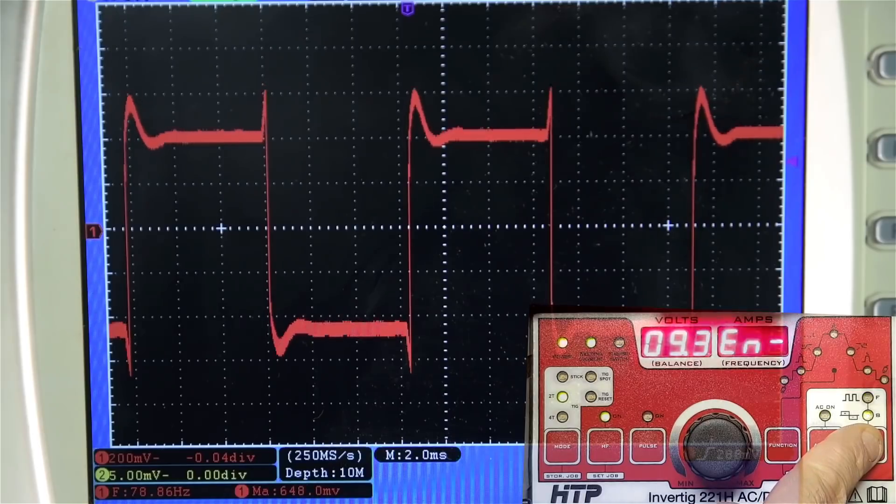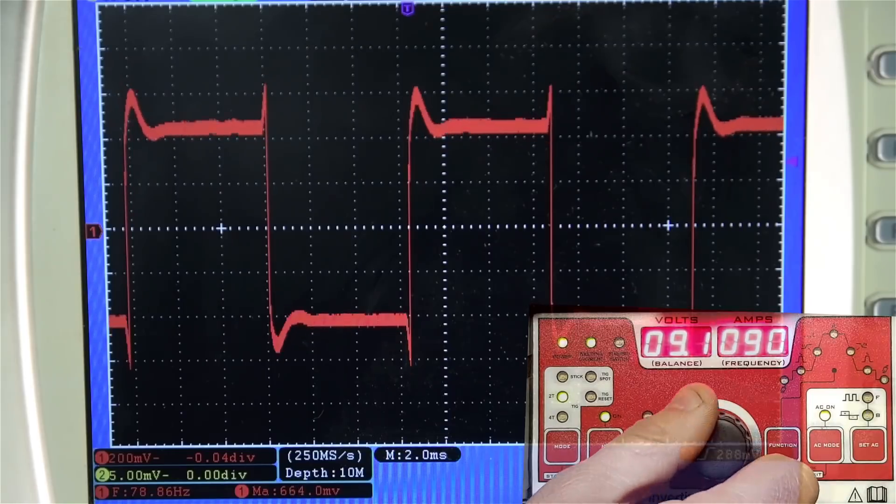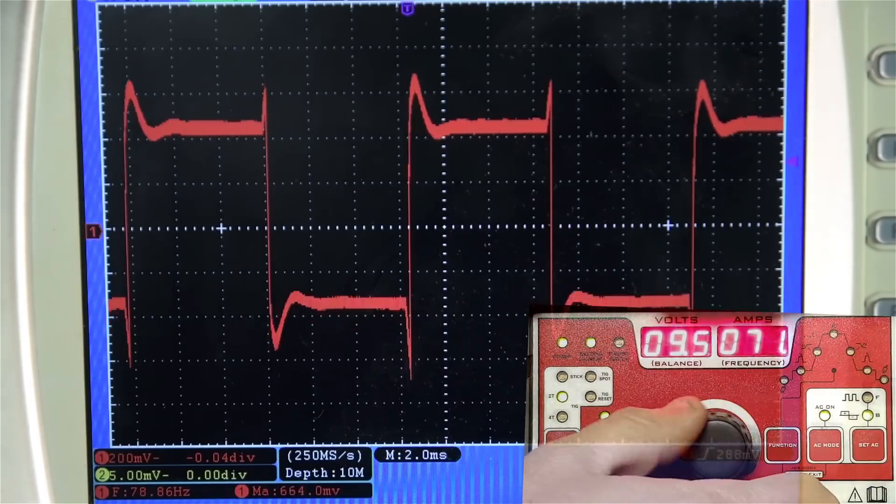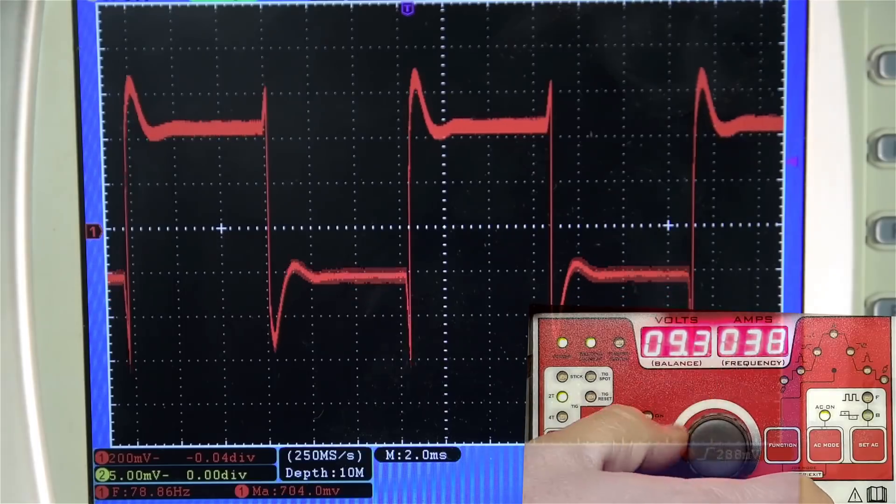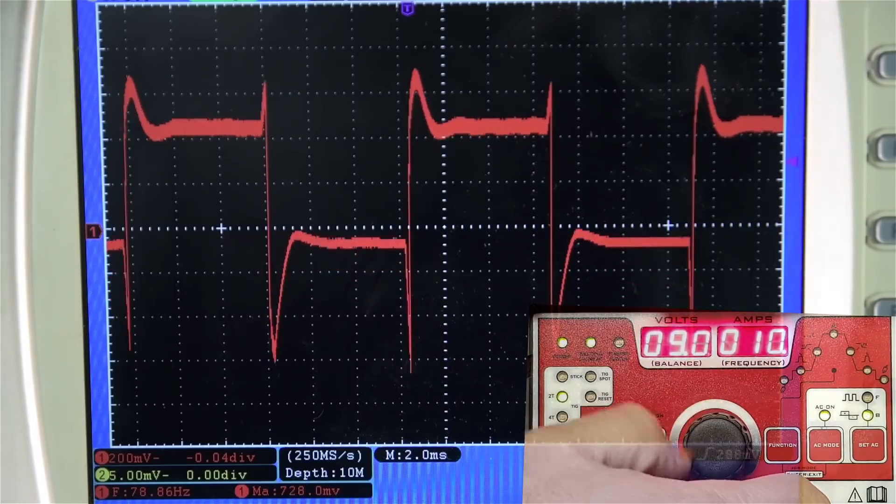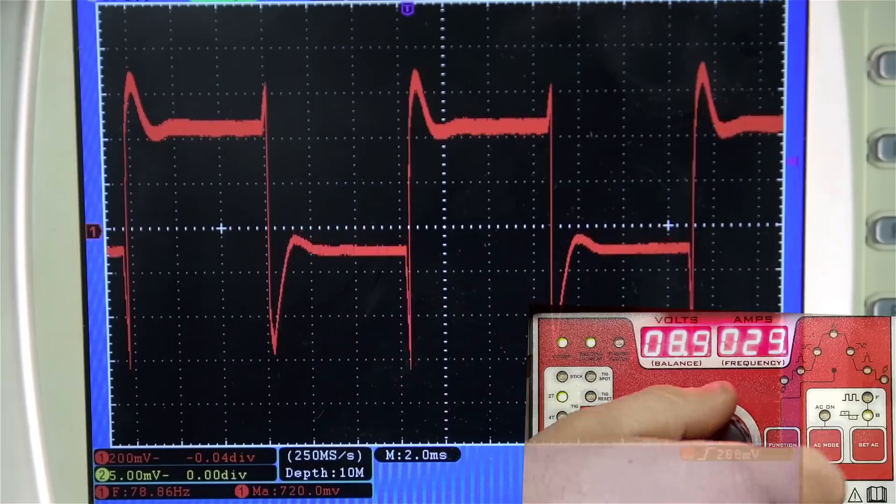If I toggle over to the electrode positive half, you'll see EMP appear on the display, which now gives me control over the other half. In this case, the HTTP 221 allows me to adjust from 10 to 90% of the machine set current.